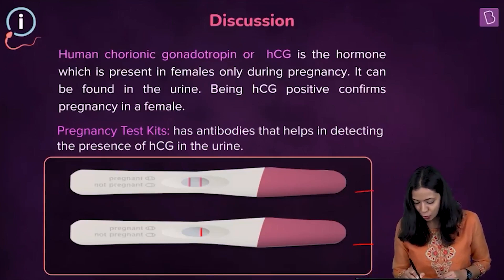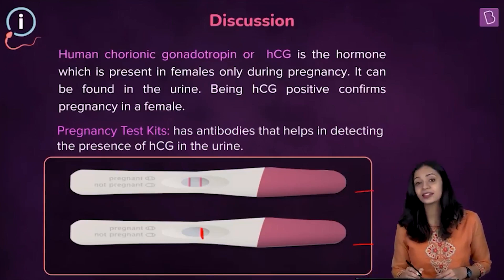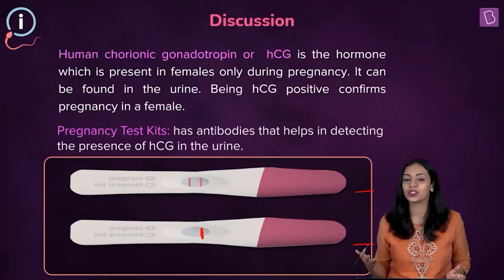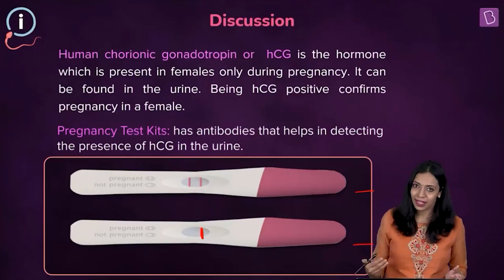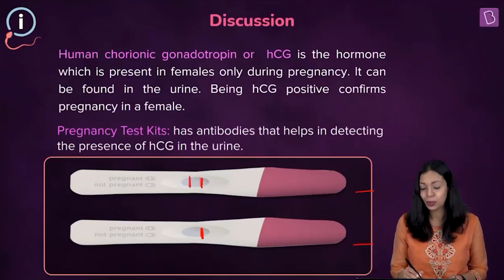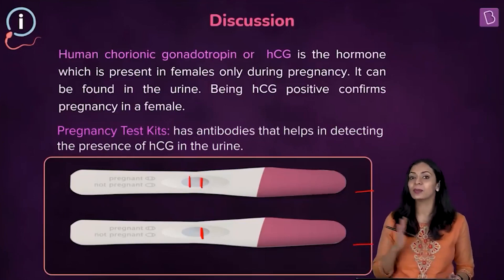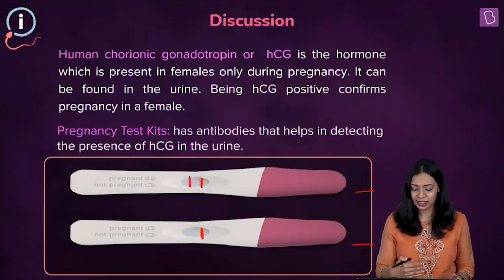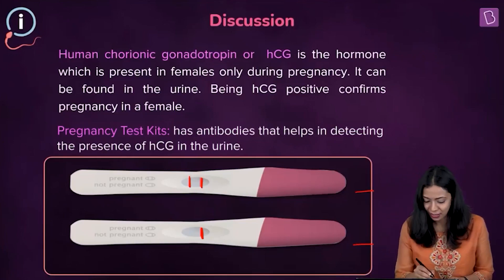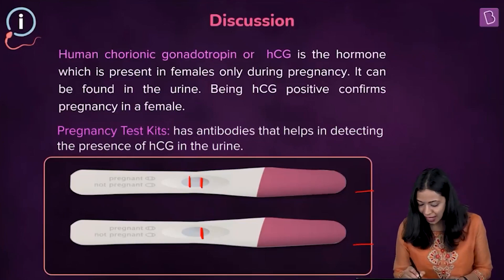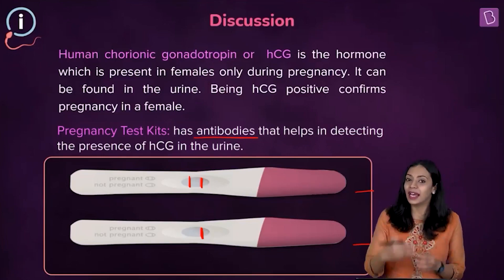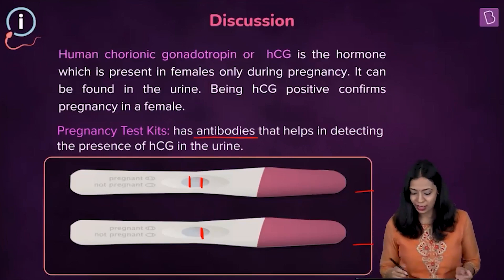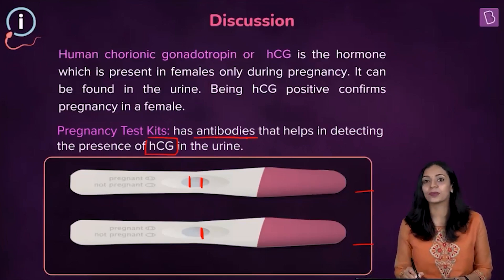If you can see just one line in the test kit, that will indicate that the woman is not pregnant, and if you can see two pink lines, it will indicate that the woman is pregnant. In this pregnancy test kit, you can find antibodies that help detect if the urine is showing the presence of HCG.